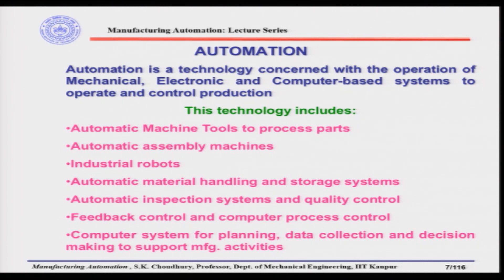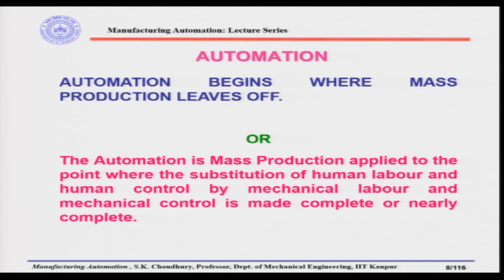These technologies are practically the same as in mass production. The difference is that automation begins where mass production leaves off. Automation is mass production applied to the point where the substitution of human labor and human control by mechanical labor and mechanical control is made complete or nearly complete.